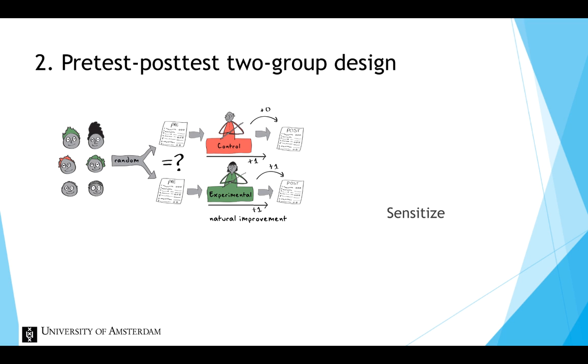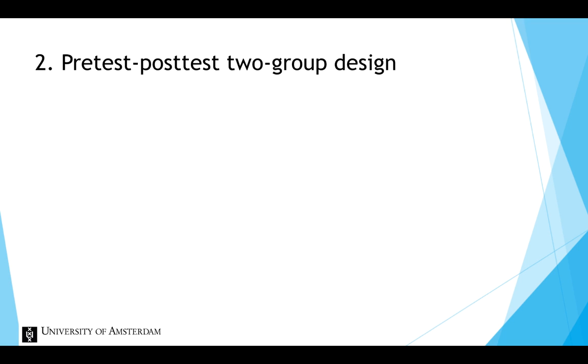We can visualize the two-group pretest-posttest design with the following schematic representation, where again R denotes that the participants have been randomly assigned to one of the two conditions. O1 and O3 are the pretests, X is the specific level of the independent variable, and O2 and O4 represent the post-tests.